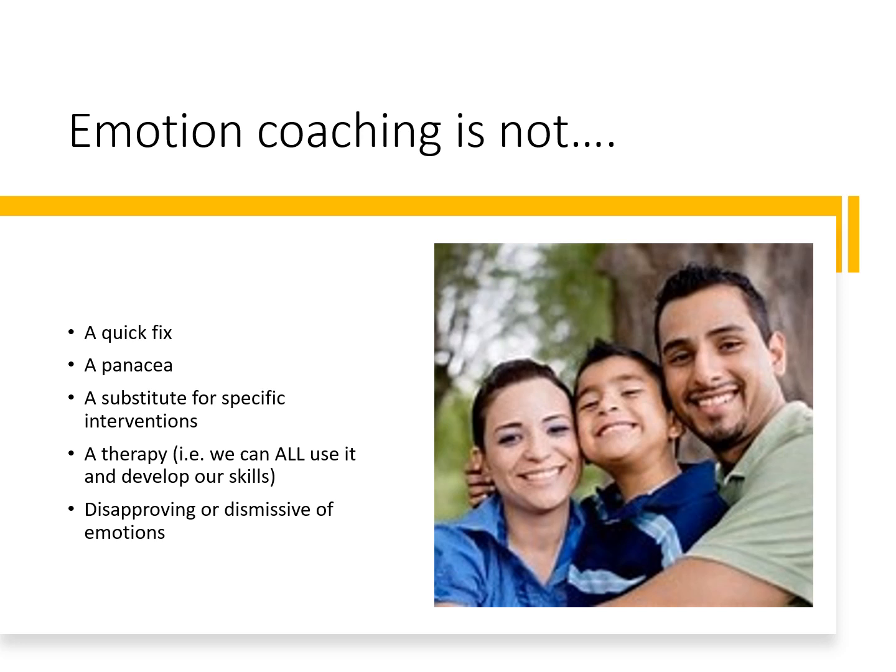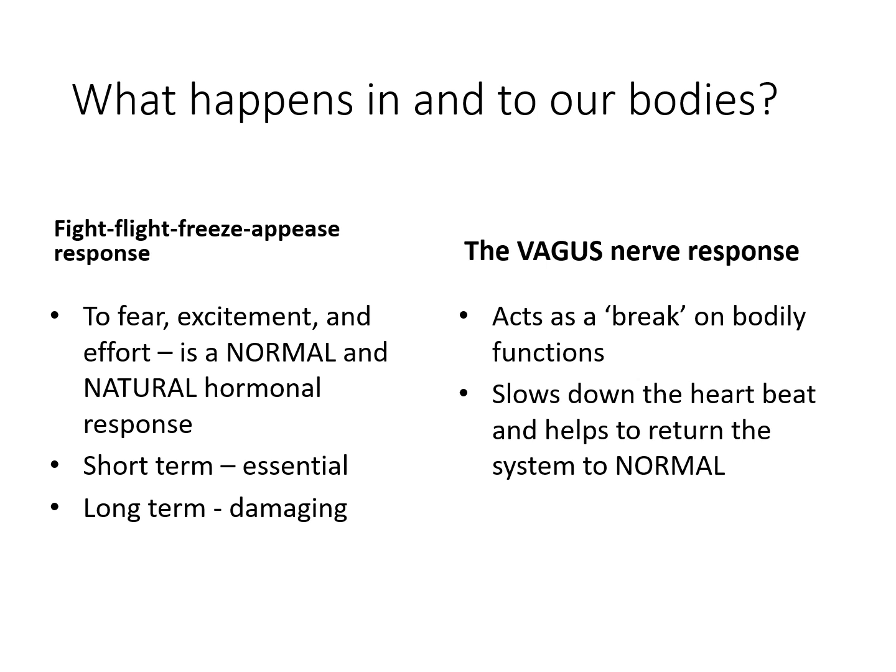What happens to our bodies in the fight, flight, freeze or appease response? Children need to be taught that this fear, excitement and effort is a normal and natural hormonal response. In the short term it is essential to keep us safe, but in the long term it can be damaging. We have the vagus nerve, which acts as a brake on bodily functions — slowing down the heartbeat and helping the system return to normal. Our vagal tone is how well our fight-flight response and vagus nerve are balanced and work together.